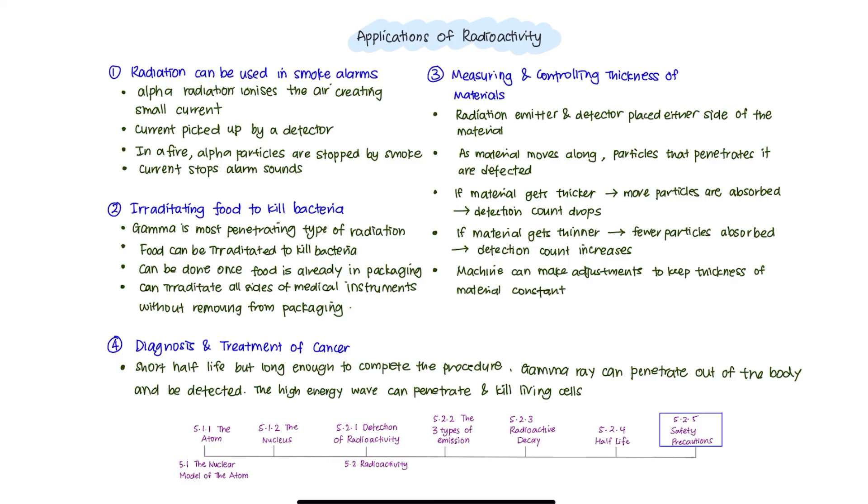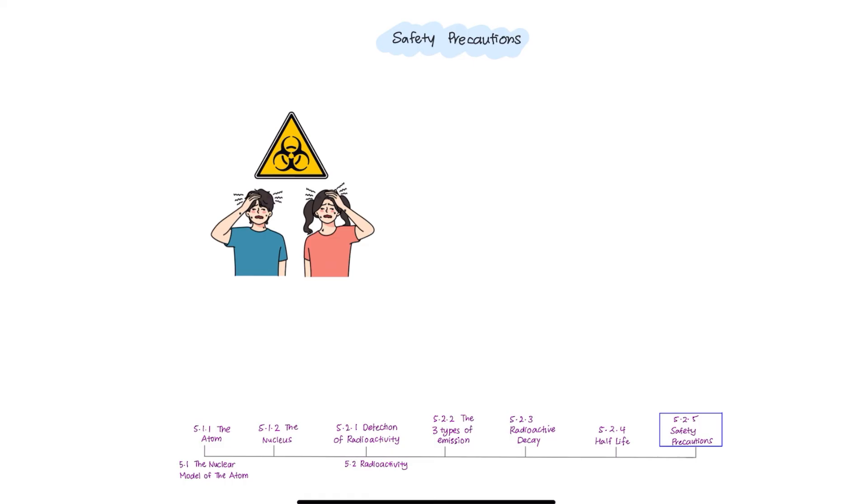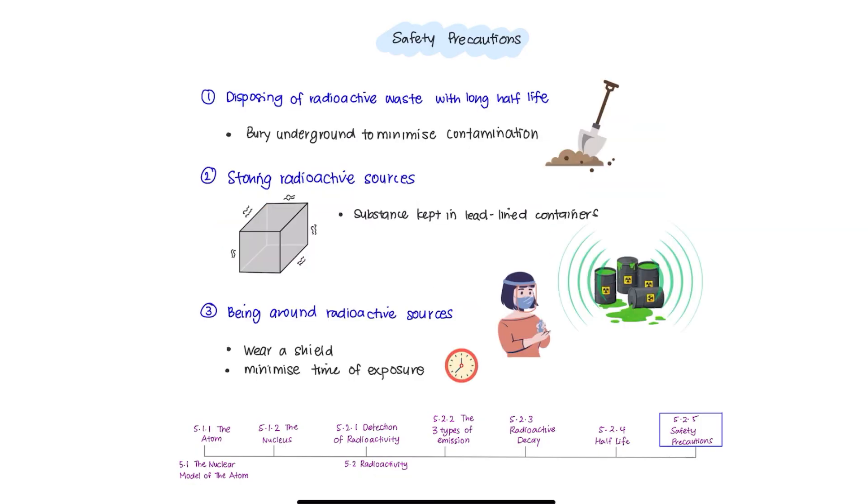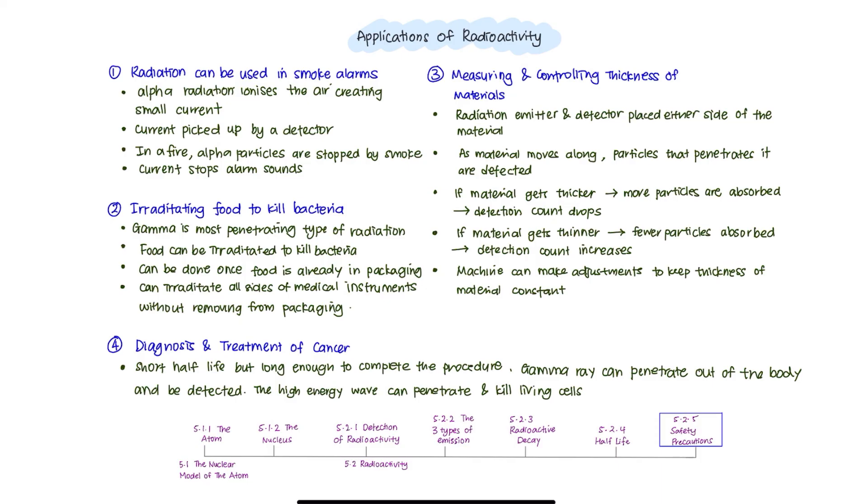Moving on to the last part of this chapter, safety precautions in handling radioactive substances. Exposure to ionizing nuclear radiation can be very harmful which leads to dead cells in the body, mutations and cancer. Therefore, precautions must be taken in these three areas. Disposing of radioactive waste with a long half-life, storing radioactive sources, and lastly, being around radioactive sources. I advise you to pause this video and write down all the important points in the application of radioactive substances and the safety precautions in handling these radioactive substances.